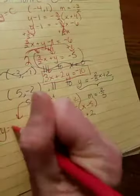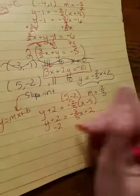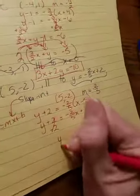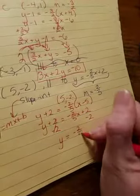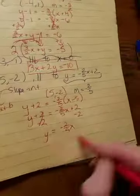Remember, slope intercept is y equals mx plus b. So I'm going to subtract this 2 to bring it over, and I'm going to get y equals negative 2 fifths x. Because 2 minus 2 is 0. So there's your answer.